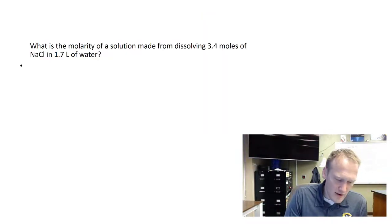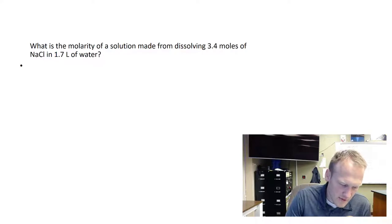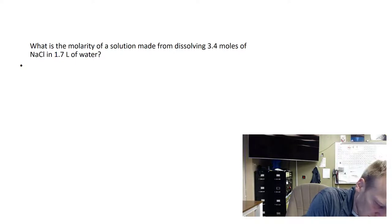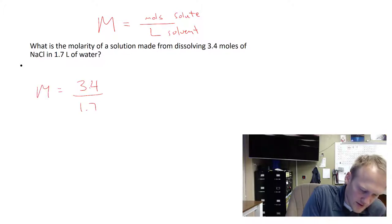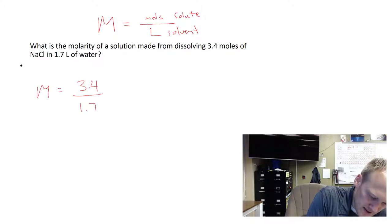What is the molarity of a solution made by 3.4 moles of NaCl and 1.7 liters of water? Remember, molarity, capital M, equals moles of solute over liters of solvent. So my solute is 3.4 moles of NaCl and 1.7 liters of water. If I do that math, this would work out to 2 molar.